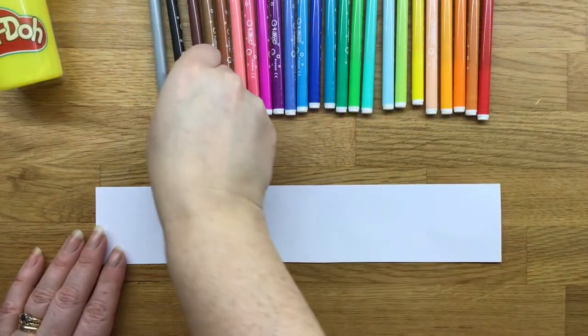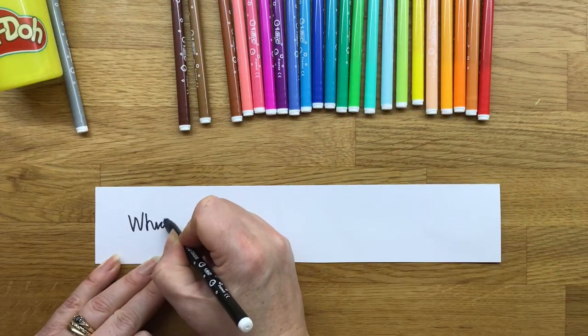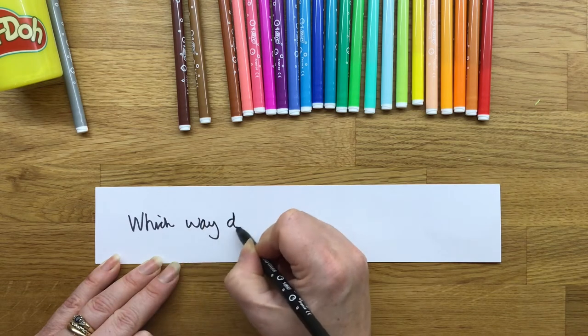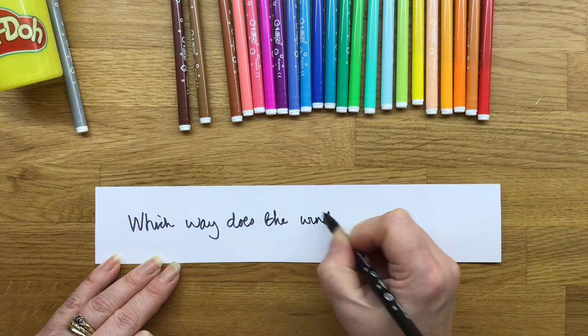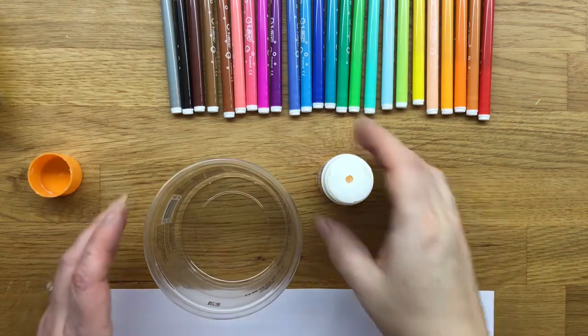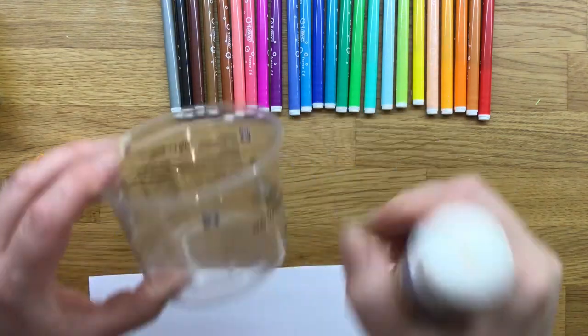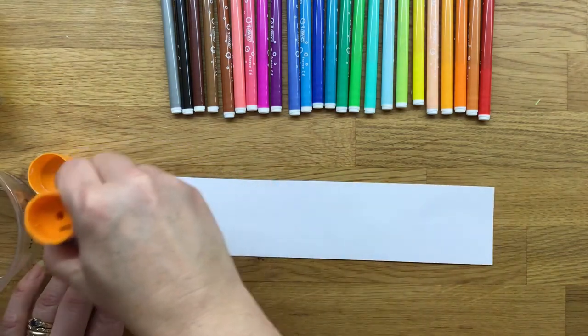You can decorate the outside of your plastic pot just as I'm doing here. So I'm writing a little message saying which way does the wind blow. Next we're going to apply some glue to the back of the cardboard to stick it to our plastic pot.